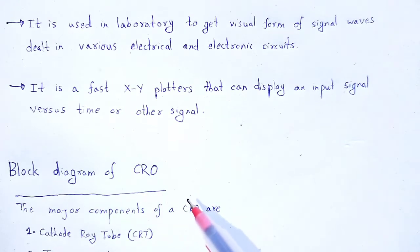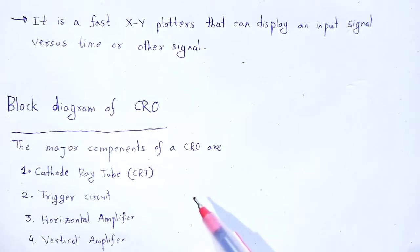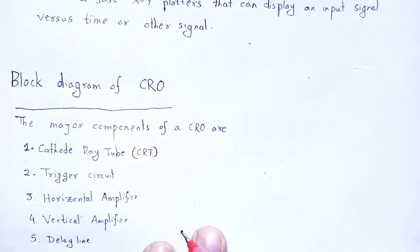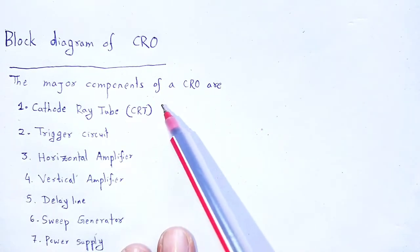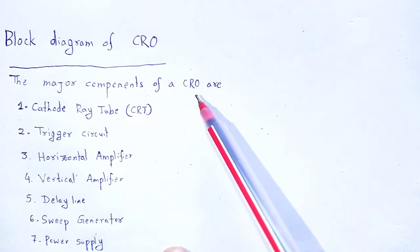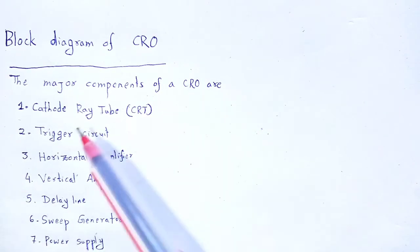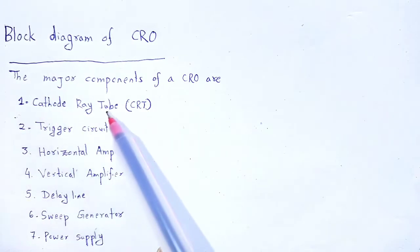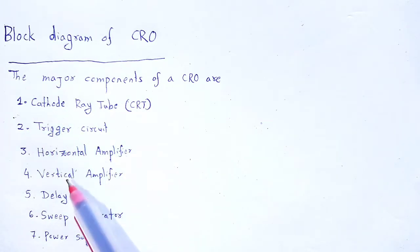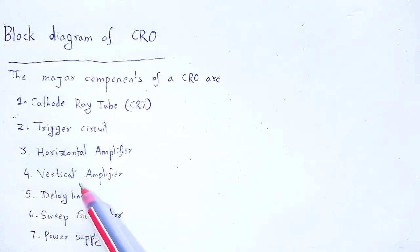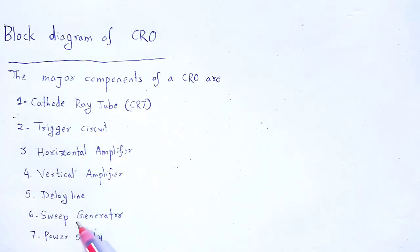Block diagram of CRO, Cathode Ray Oscilloscope. The major components of a Cathode Ray Oscilloscope are: cathode ray tube (CRT), trigger circuit, horizontal amplifier, vertical amplifier, delay line, sweep generator, and power supply.